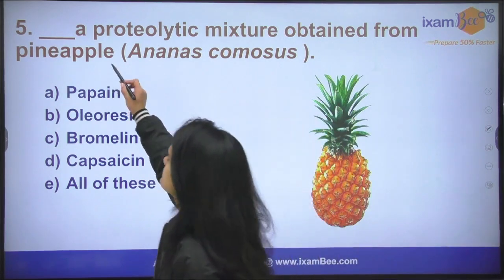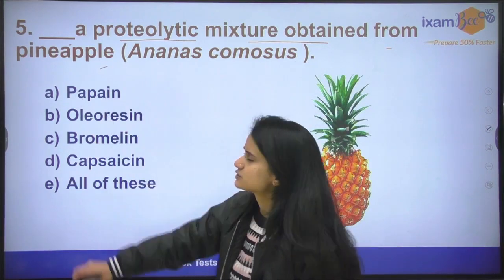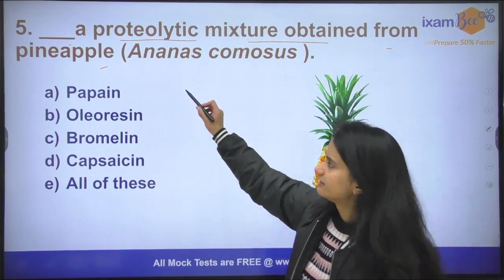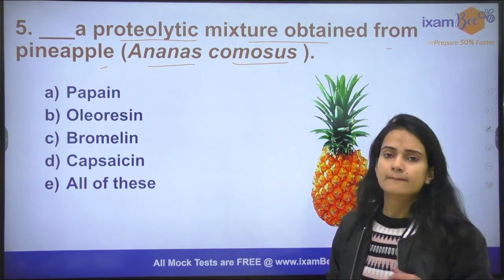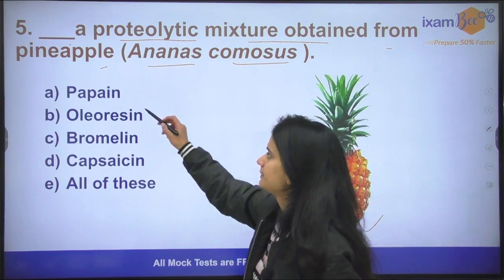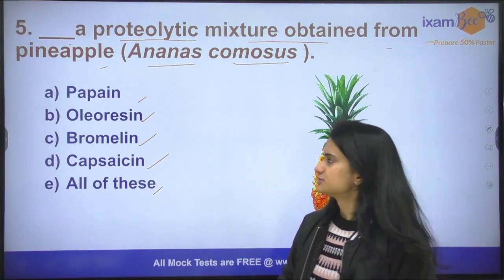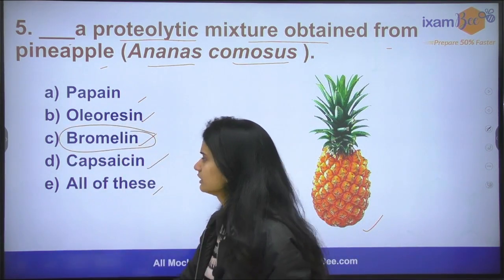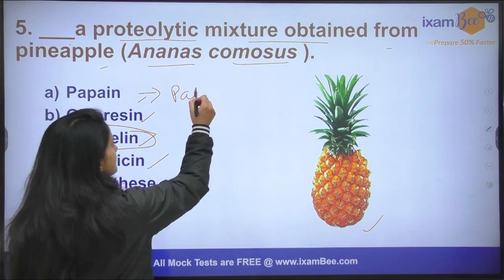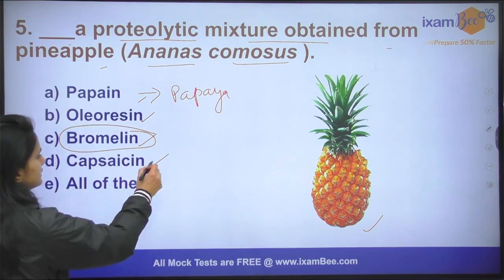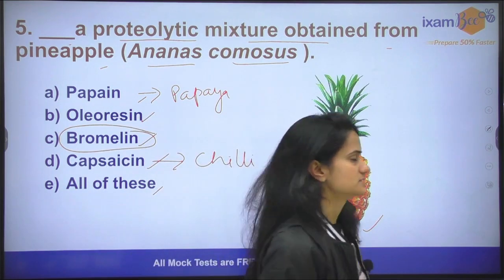Question number five: What is the proteolytic mixture obtained from pineapple? The scientific name of pineapple is Ananas comosus. The options are papain, oleoresin, bromelain, capsaicin, or all of these. The answer is bromelain. Papain is obtained from papaya, and capsaicin is found in chili.